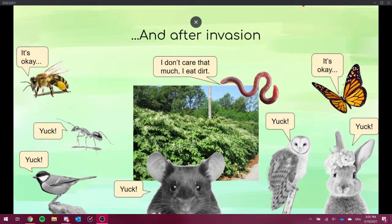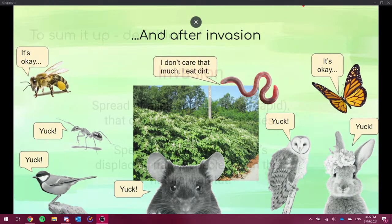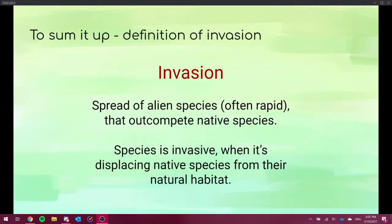While some invertebrates population may also suffer because they have less diverse sources of food. So this is one of the big threats. And to sum it up, I would like to present a clear definition of biological invasion, which is a spread of alien species, often rapid, that outcompete the native species.